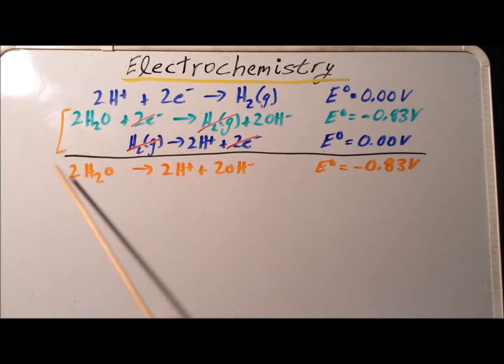Since we've added the two reactions together, we add together the half cell voltages so that we get for this overall reaction, two H2O going to two H+ plus two hydroxide. The standard cell voltage for this is going to be minus 0.83 volts.